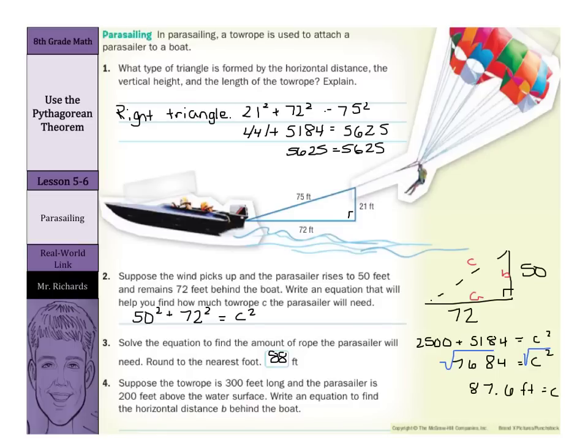Now, number four. Suppose the tow rope is 300 feet long. And the parasailer is 200 feet above the water surface. Write an equation to find the horizontal distance B behind the boat. Okay. Let's draw a triangle first. We're looking for the horizontal distance, which is B here. We're saying the tow rope is 300 feet long. And the tow rope has been our hypotenuse C. And we're now 200 feet up. Well, this looks like we're going to have 200 squared plus B squared is going to equal the hypotenuse 300 squared.